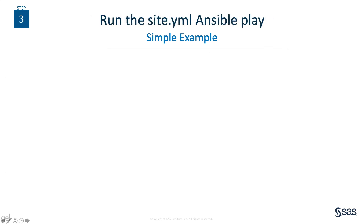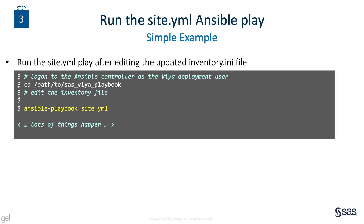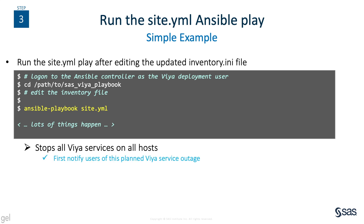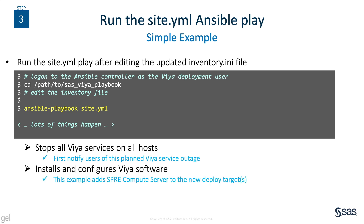The site.yaml play file contains the instructions that Ansible will follow to actually install SAS Viya software. After editing the inventory file, we're ready for Ansible to install the SPREE software on the new host by calling the Ansible playbook command and specifying site.yaml as the input file. The first thing the site.yaml play will check is if Viya services are currently up and running. If they are, then it will stop them automatically. That's why we want to schedule this outage and notify our users so that their work isn't interrupted by surprise. Once the installation changes are complete, site.yaml will direct the automatic startup of Viya software on all hosts, including the new SPREE Compute Server.